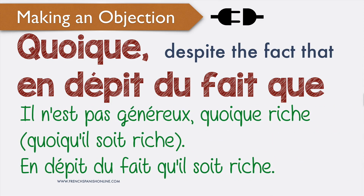For example: 'il n'est pas généreux quoique riche'. If you add a verb, you say 'quoiqu'il soit riche' — note the subjunctive mood here. Similarly: 'il n'est pas généreux en dépit du fait qu'il soit riche' — again with the subjunctive. Despite the fact that he is rich, he is not generous.